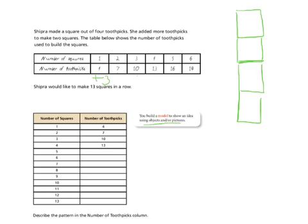Using that rule, I can continue the table all the way up to thirteen squares. Adding three each time: 13, 16, 19, 22, 25, 28, 31, 34, 37, 40. That leaves us with 40 as our final answer for thirteen squares.